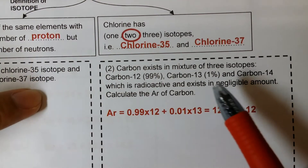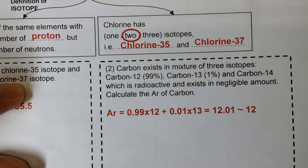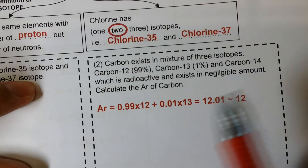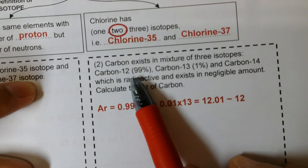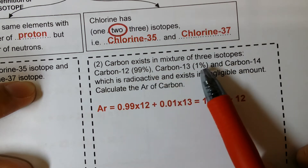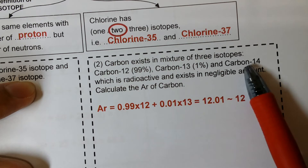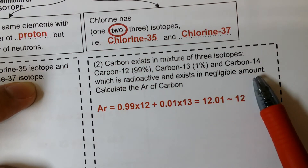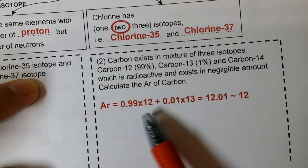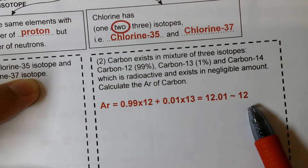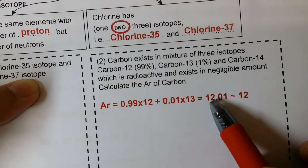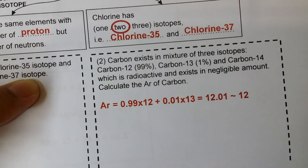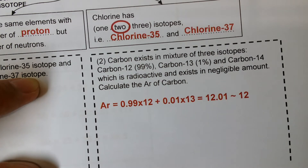A second example is carbon. Carbon exists in a mixture of three isotopes: carbon-12 at 99%, carbon-13 at 1%, and a trace amount of carbon-14, which is negligible. Doing the calculation gives 12.01, which is very close to 12. Because the difference is very insignificant, we round it to 12. So in the periodic table, all elements appear to have a whole number AR except chlorine — but this doesn't mean other elements have no isotopes.